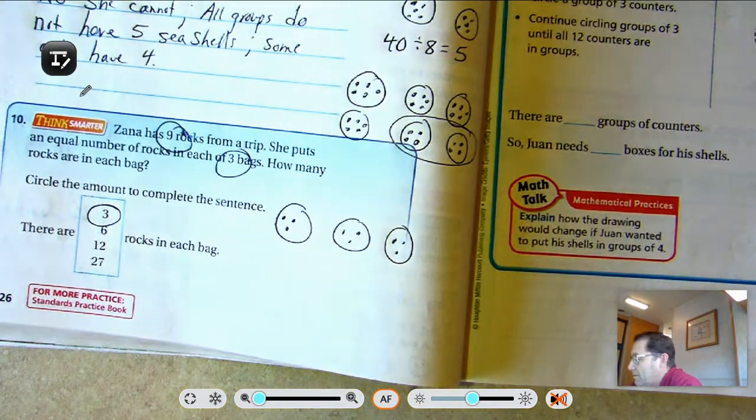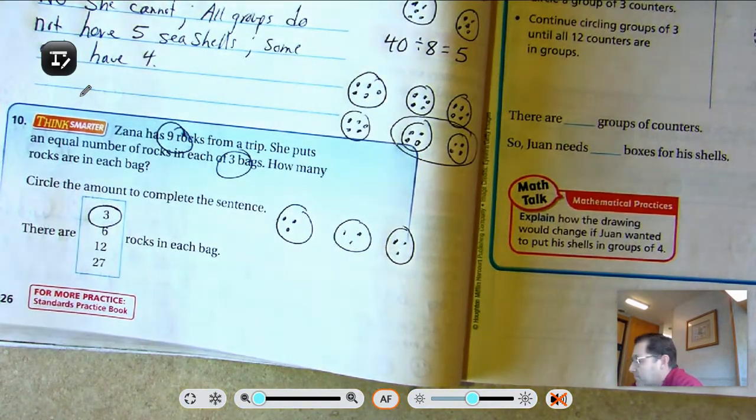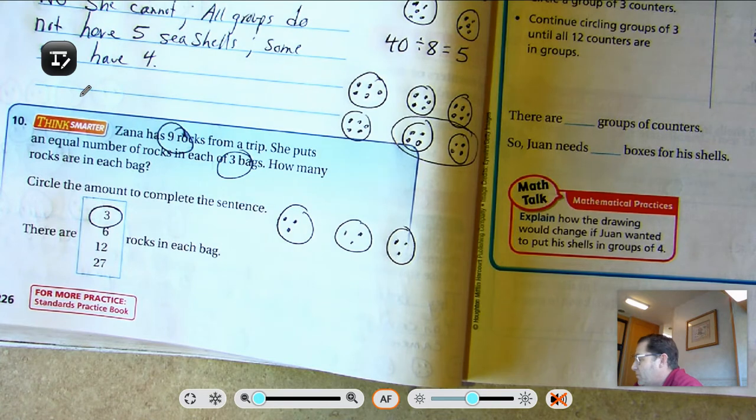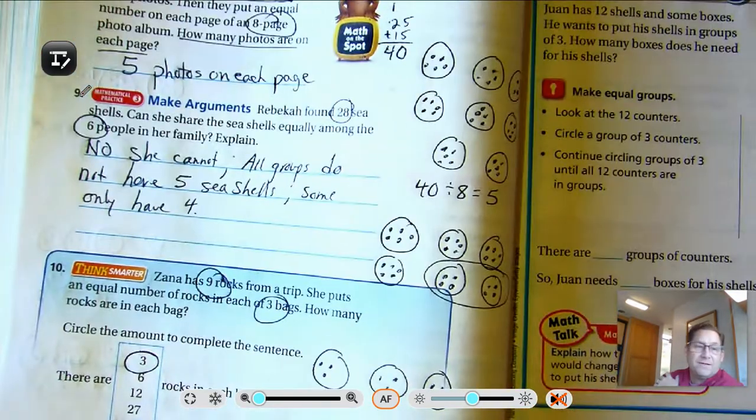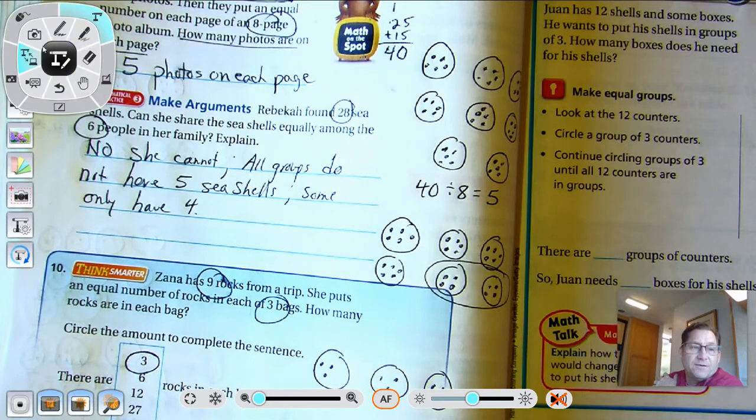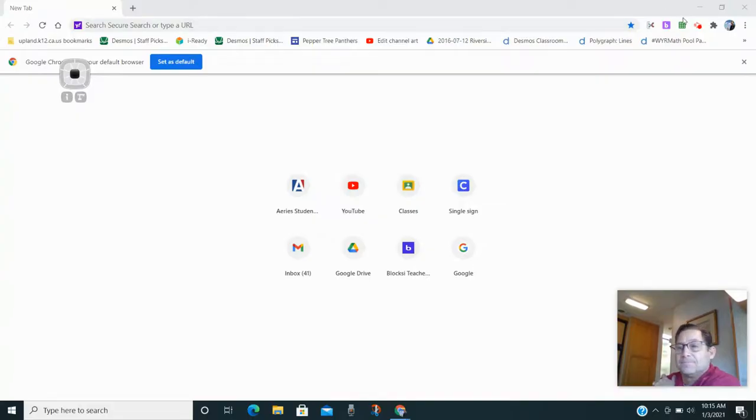So that's it for size of equal groups. In our next lesson, we'll be talking about the number of equal groups. So until then, may the numbers always be in your favor. Thank you.